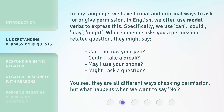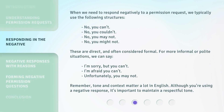But what happens when we want to say no? When we need to respond negatively to a permission request, we typically use the following structures: No, you can't. No, you couldn't. No, you may not. No, you might not. These are direct, and often considered formal.